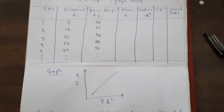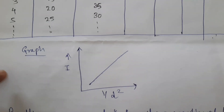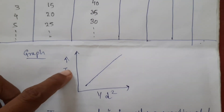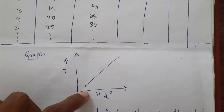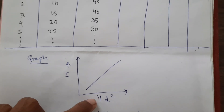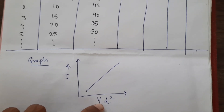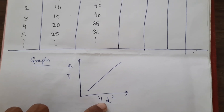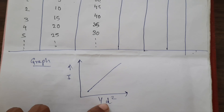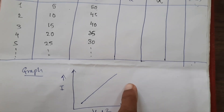Once you note down the readings, plot a graph of current versus 1/d² (the reciprocal of the square of the distance). This graph is going to be a straight line.